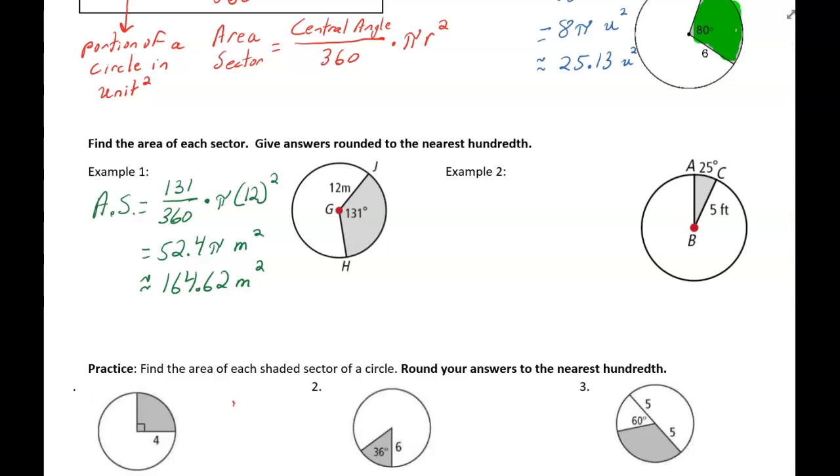Example number two on the right. Again, area of a sector is the central angle. So the central angle here is 25 degrees because the arc measure is 25 degrees. So 25 over 360 times pi times the radius, which is five. I'm going to square that. Typing that in my calculator...